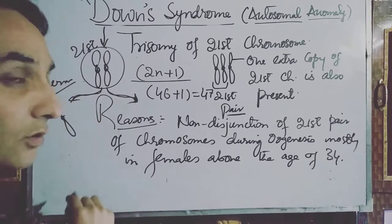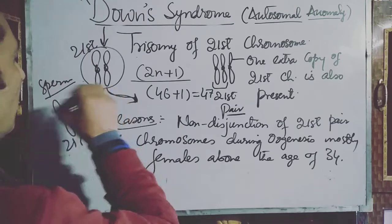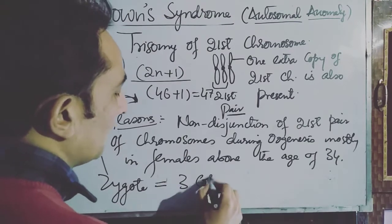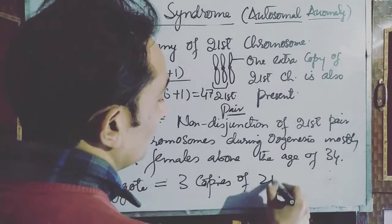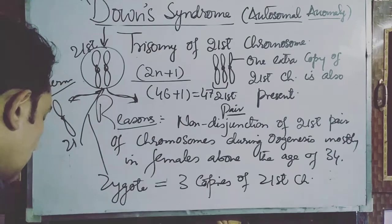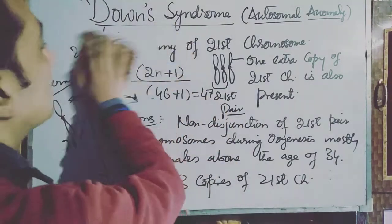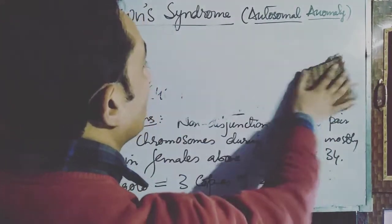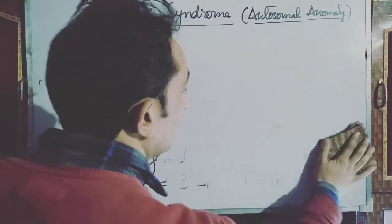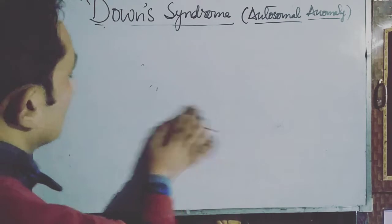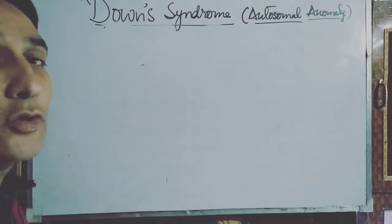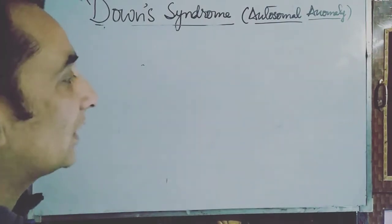When such an egg is fertilized by a sperm which has the normal one copy of the 21st chromosome, the resulting zygote would have three copies of the 21st chromosome. That condition is defined as trisomy of the 21st chromosome. The non-disjunction of the 21st pair during oogenesis mostly occurs in females above the age of 34.